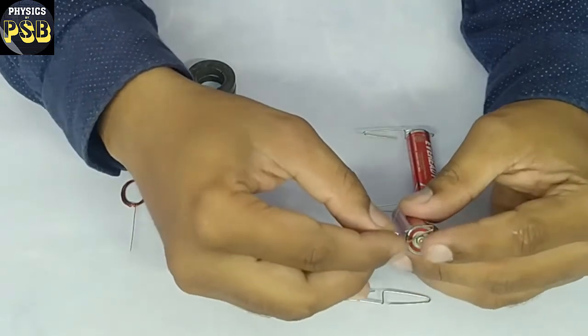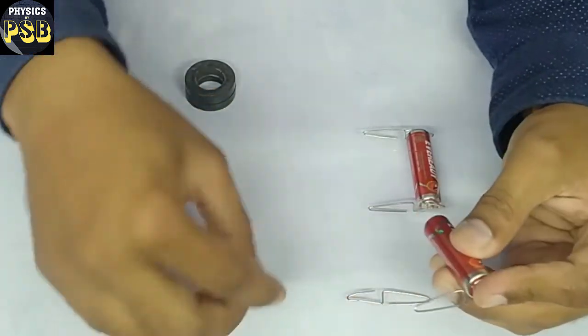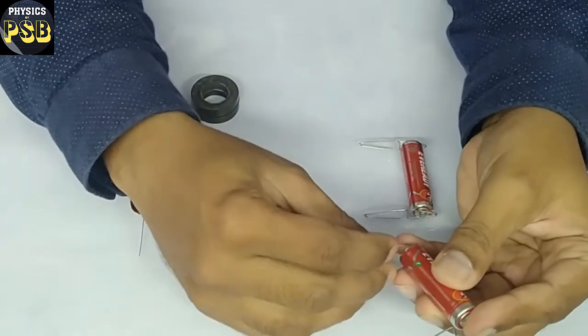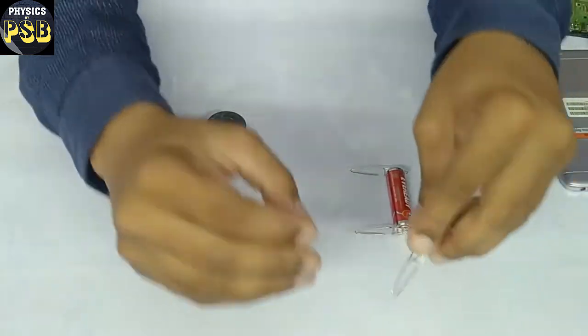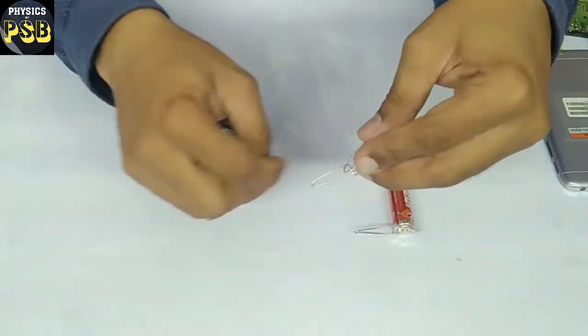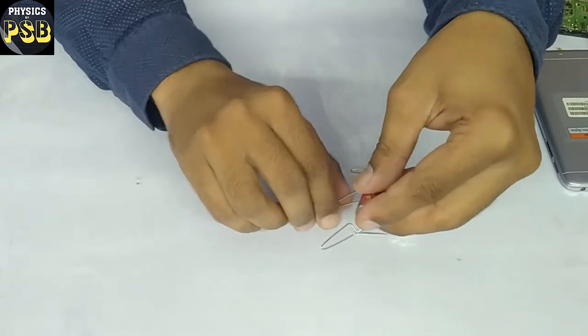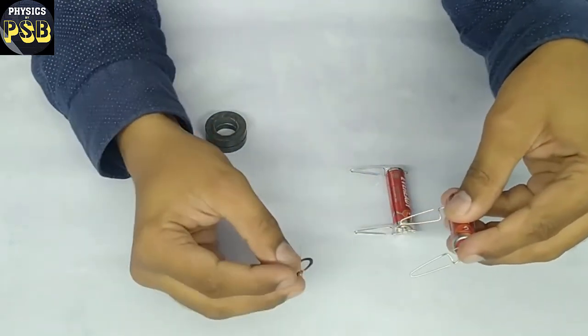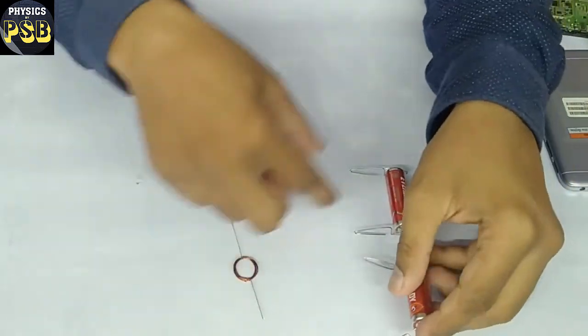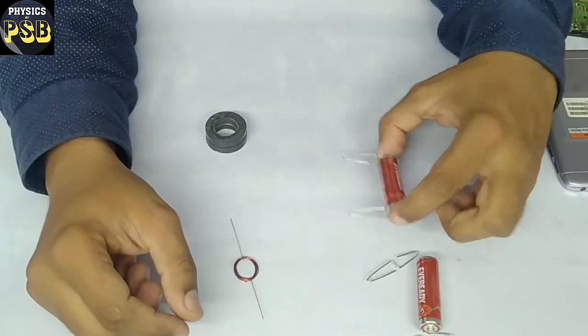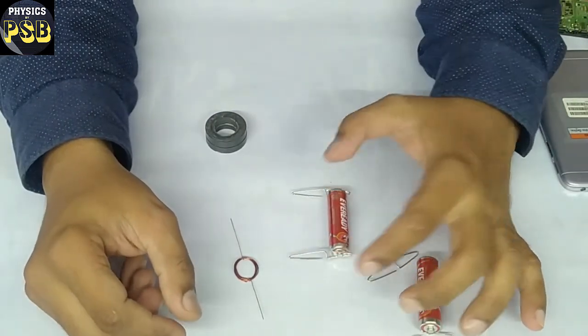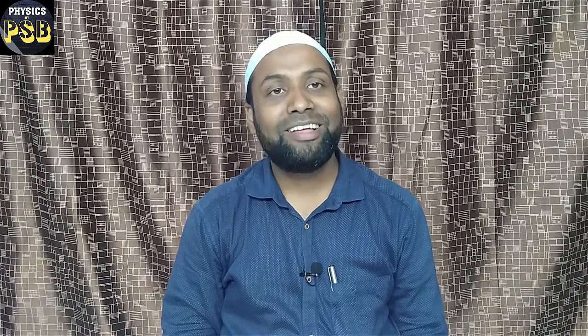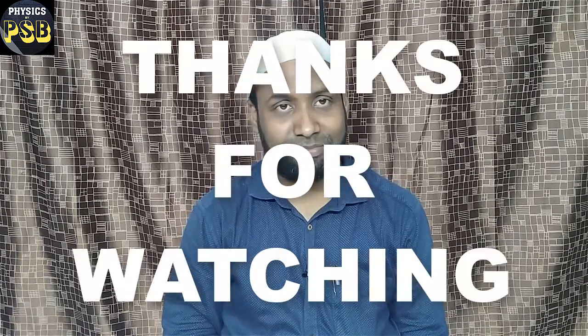Then place your armature. Your DC motor is ready. I hope the video is useful. If you have any kind of doubt related to the topic, kindly put your questions in the comment section. Thank you, thanks for watching.